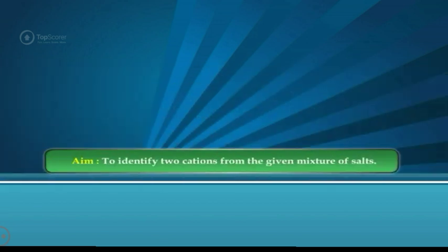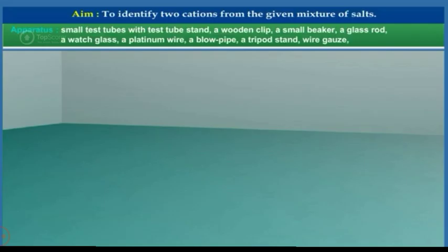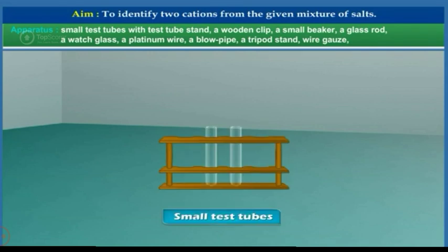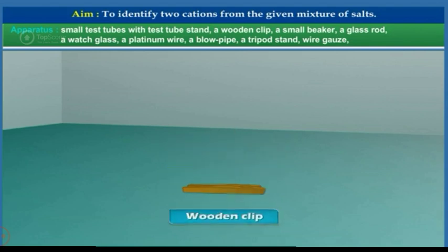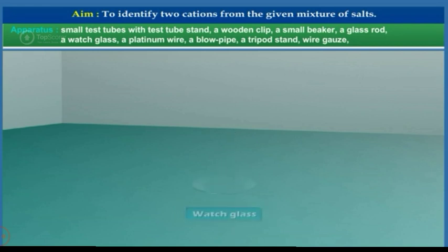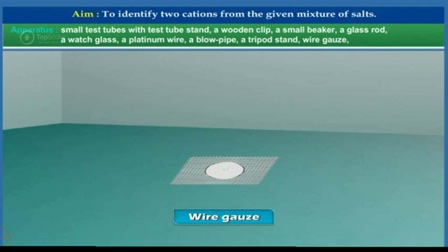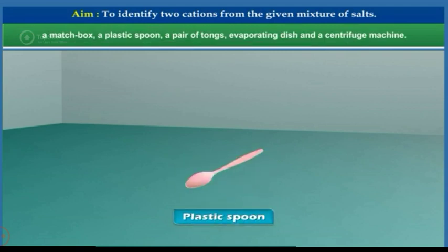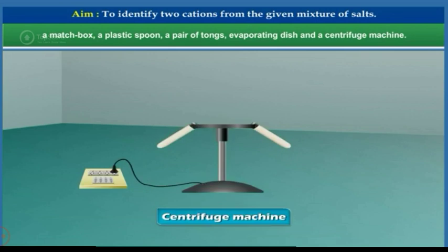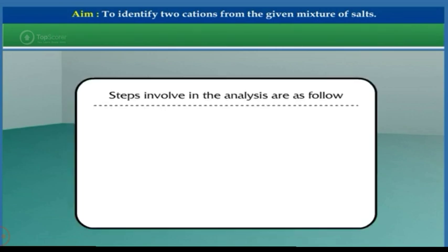Aim: To identify two cations from the given mixture of salts. The apparatus required are: small test tubes with test tube stand, a wooden clip, a small beaker, a glass rod, a watch glass, a platinum wire, a blow pipe, a tripod stand, wire gauze, a match box, a plastic spoon, a pair of tongs, an evaporating dish, and a centrifuge machine.